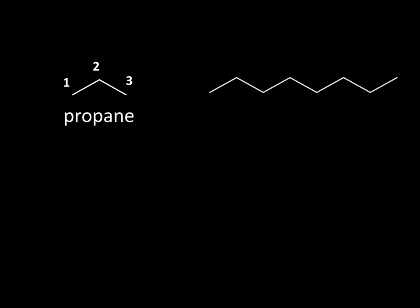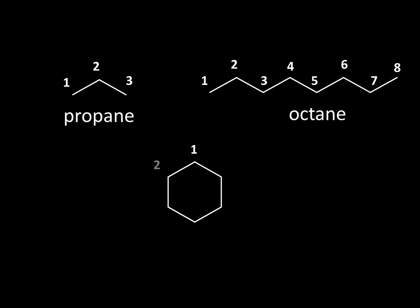Applying that knowledge, this three-carbon compound must be propane. With eight carbons, we're thinking octagon, and this is octane. Six in a ring — it's a hexane. To indicate the ring, we use the prefix cyclo. So this is cyclohexane. You can imagine many other combinations and options.